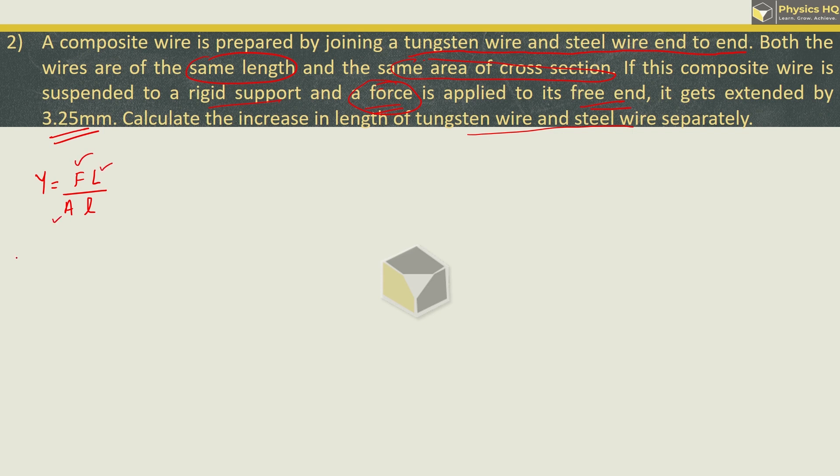Length is the same and cross sectional area, so we can say Young's modulus will be inversely proportional to extension. So Y_steel / Y_tungsten = ΔL_tungsten / ΔL_steel. Young's modulus of steel is 2 × 10^11, and Young's modulus of tungsten is 3.4 × 10^11. If you see in textbook it says 10^8 but it is 10^11. So this is 1/1.7.